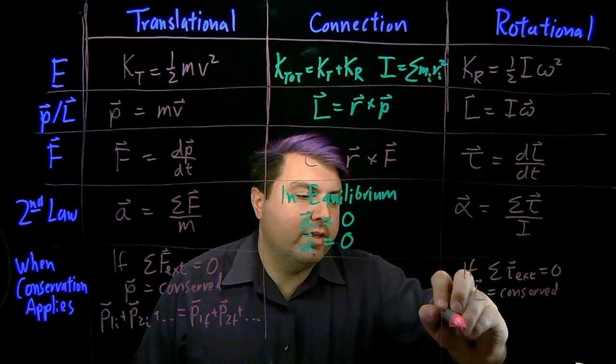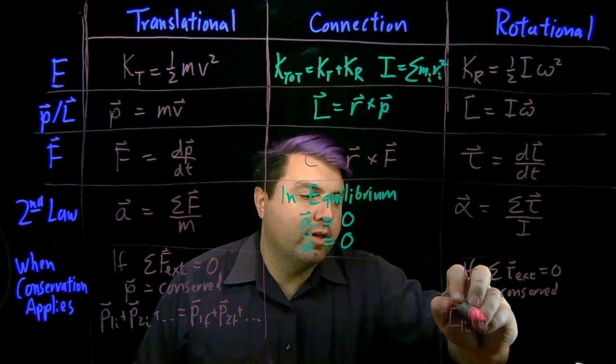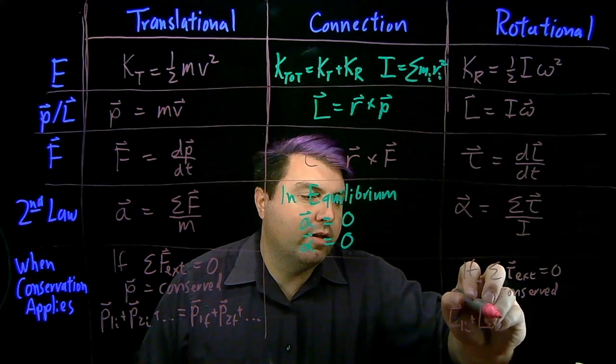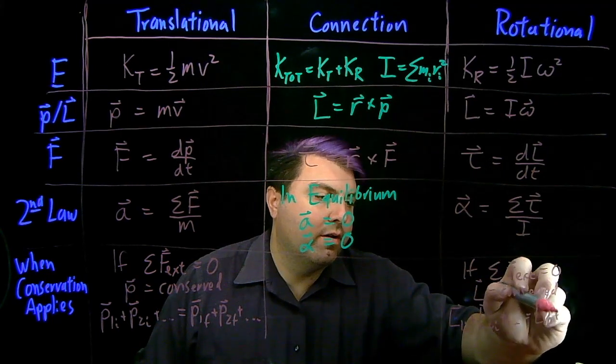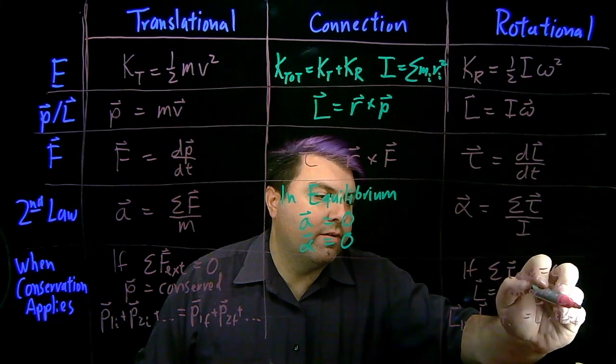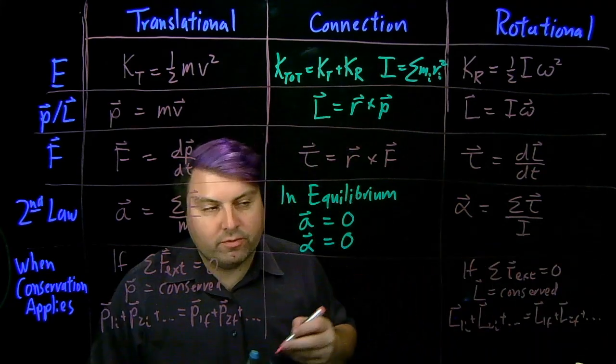And the equations we would get from this is L1i plus L2i, so on and so forth, equals L1f, plus L2f, and so on and so forth.